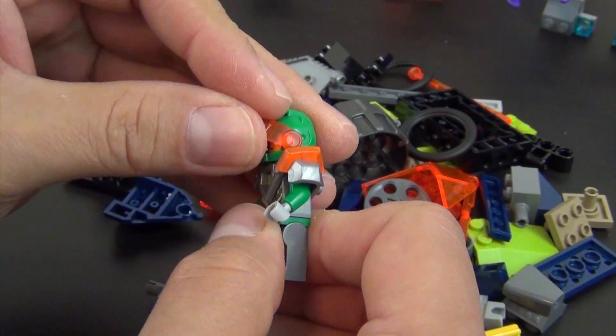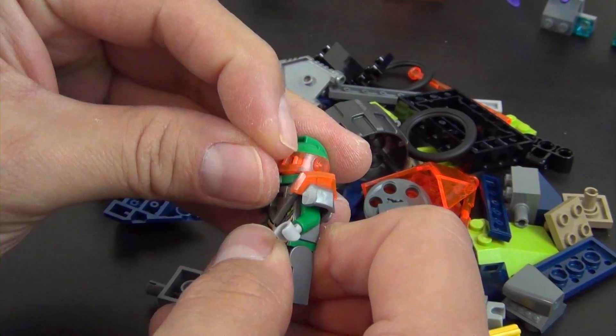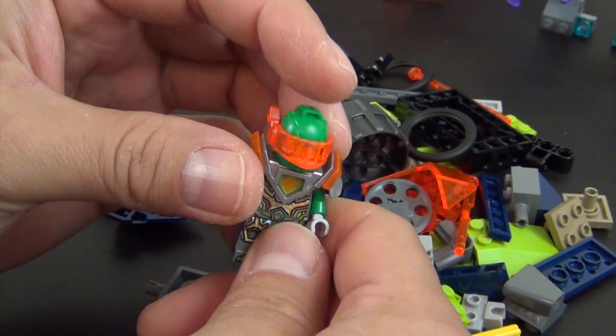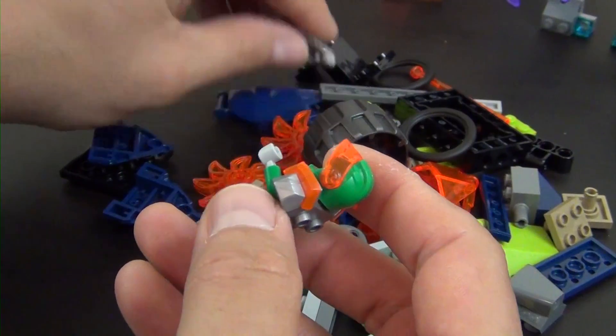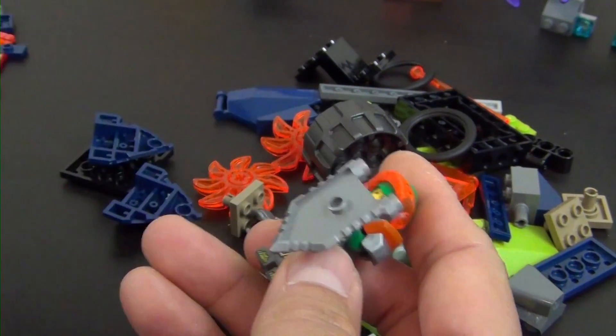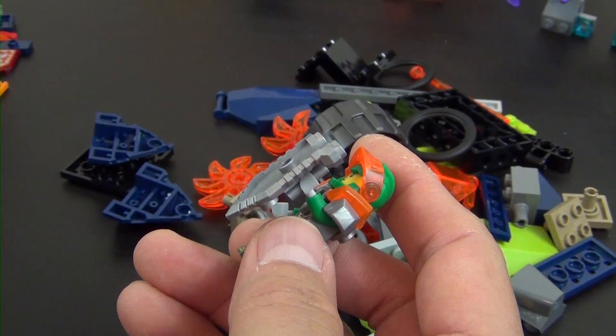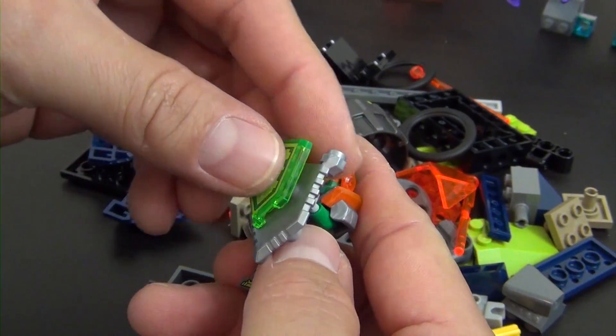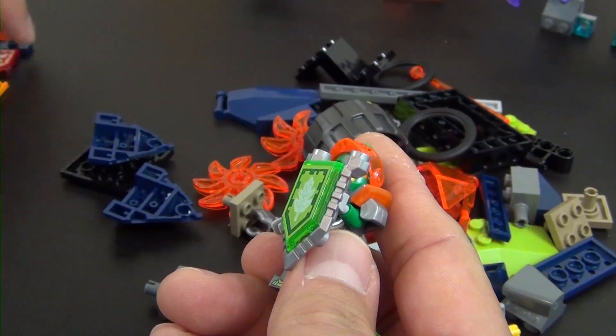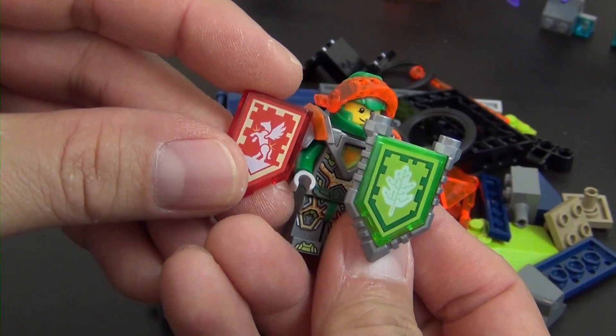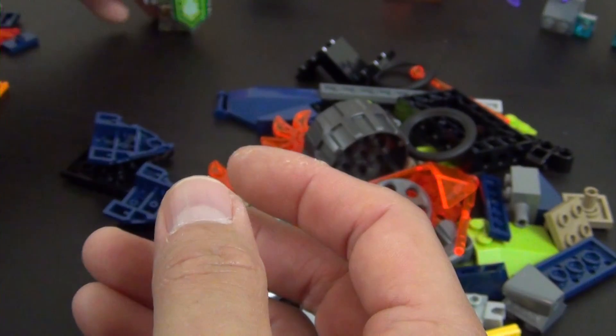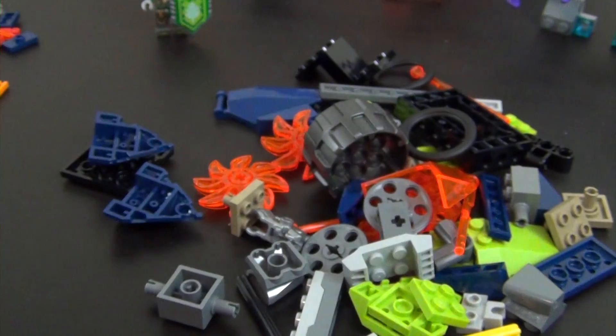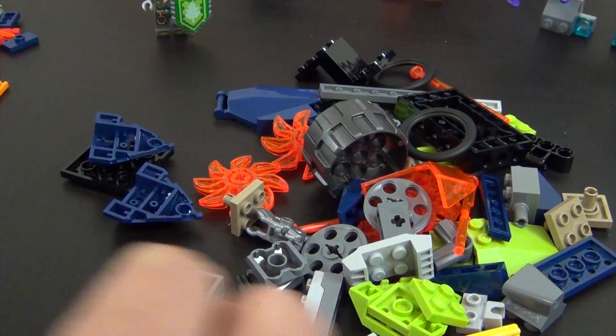It's the green helmet with the trans orange face mask. Trans fluorescent orange. He's got the big Nexo shield, Nexo power. He also has his extra Nexo power. Move that to the side.